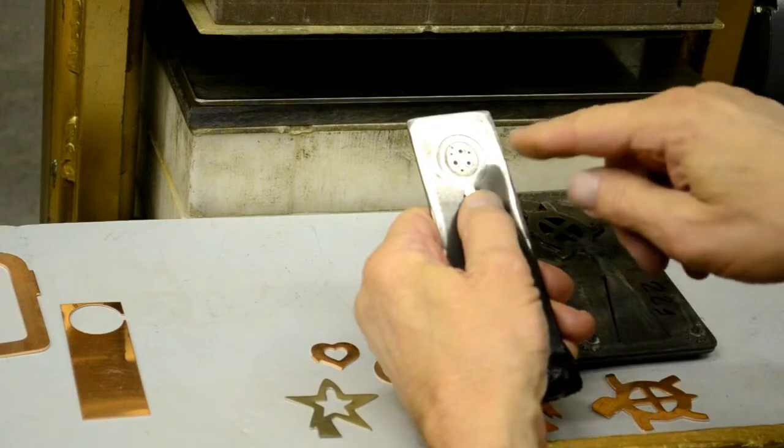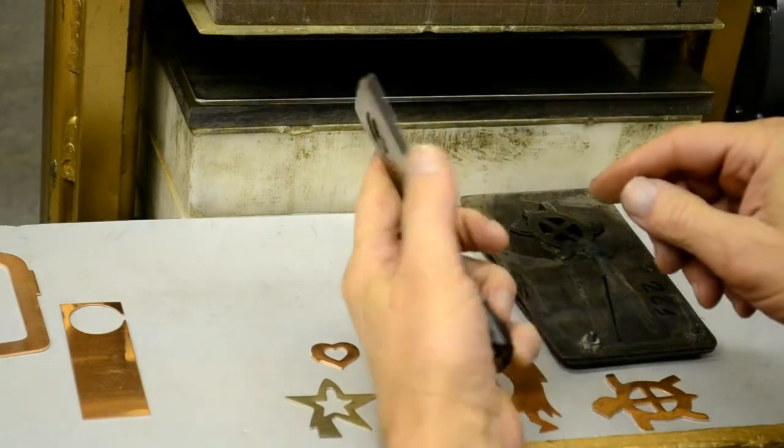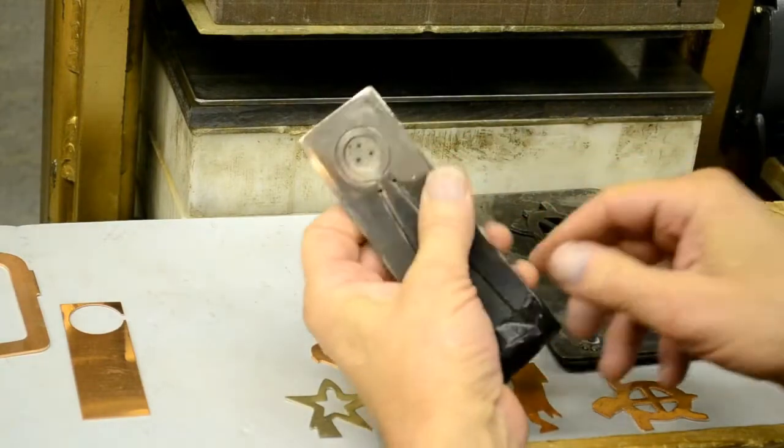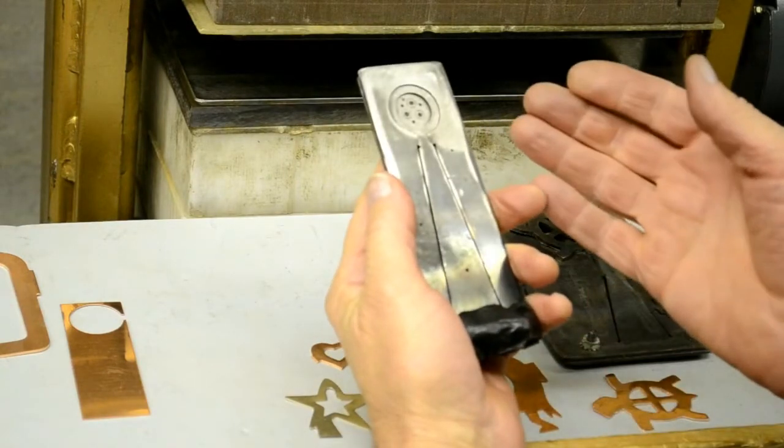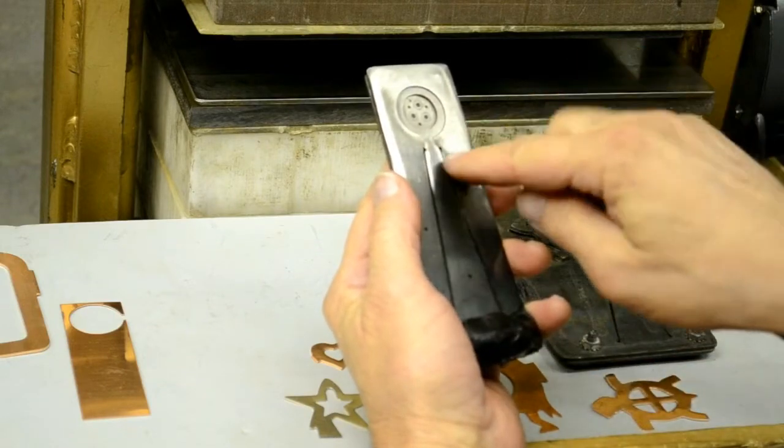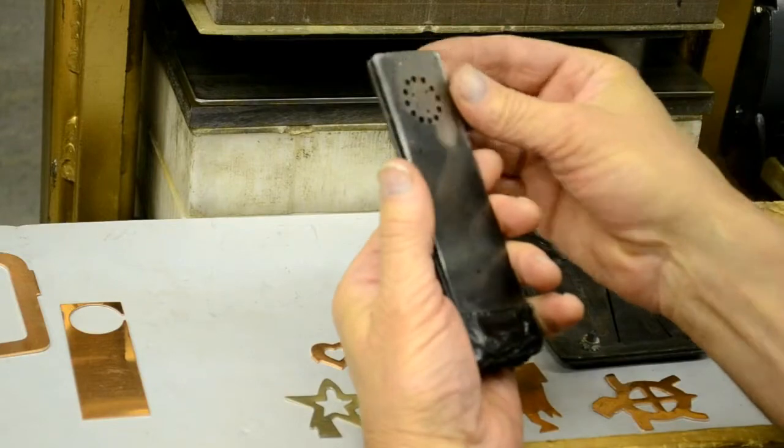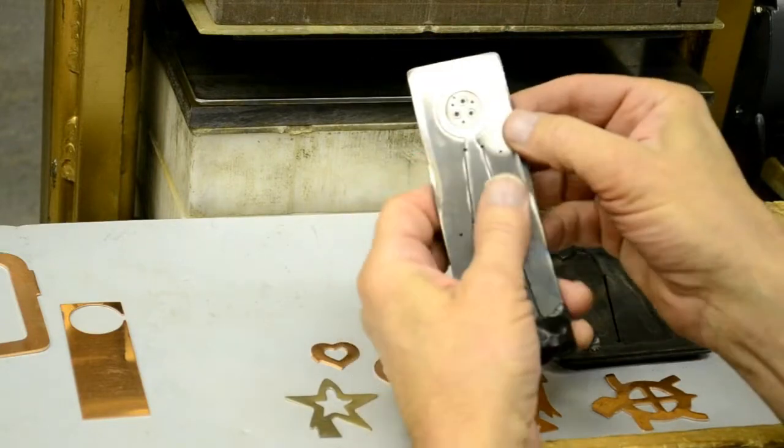His idea was to cut the center all the way out and attach it to its own plate. So basically what you have is two dies, the regular front one that cuts the part out going this direction and the secondary die which cuts the center hole out from the other direction.